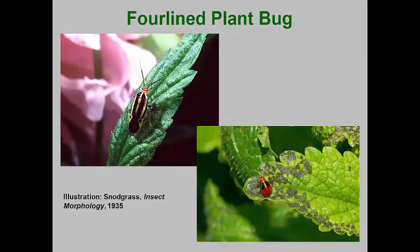The four-line plant bug is an extremely common plant bug species found in our landscapes. It is named because the adult has four obvious longitudinal black stripes or lines down its back. The rest of the body is a yellow-green and the head is orange. The nymphs are a brilliant red color when they hatch and their wing pads are black, with paired black dots on each of the abdominal segments.